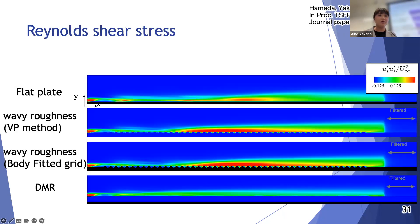There is also some statistics of Reynolds shear stress. This is averaged in time and spanwise. This is flat plate with TS wave input then generates Reynolds shear stress in downstream. The wavy roughness is here. In penalization method and body-fitted grid, one is compared on our DMR like this.